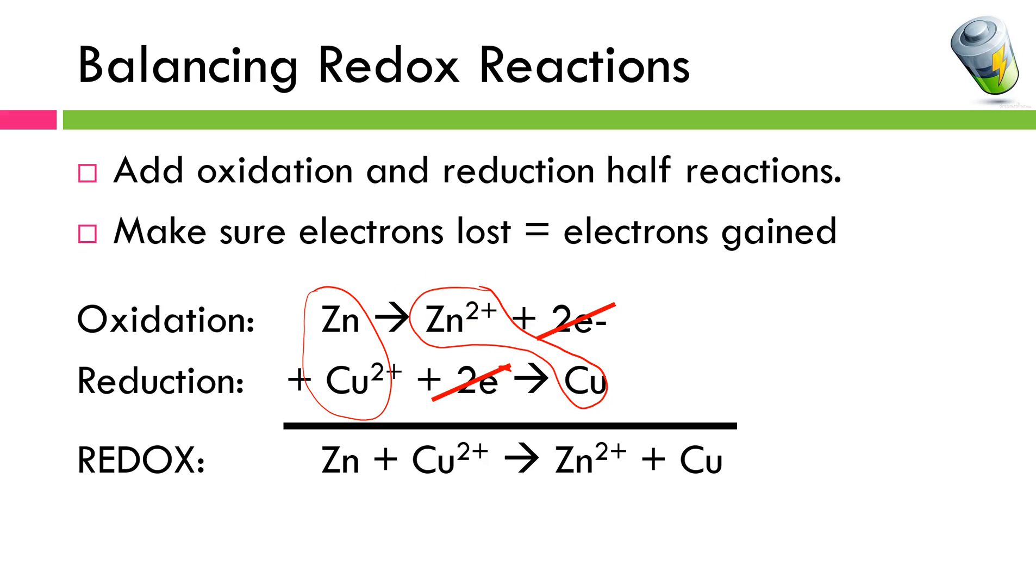Our full balanced redox equation would just be our reactants, in this case Zn and Cu2+, then the arrow and our products. Zn2+ and copper. Notice how we're balanced for both mass and charge. I've got one zinc on each side of the equation, same thing with copper. I've got a total charge of 2+ on the reactants and 2+ on the products, so I am balanced. We'll show you some problems about what to do when the electrons lost do not equal the electrons gained.